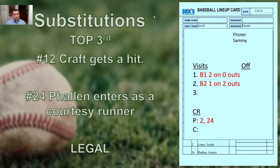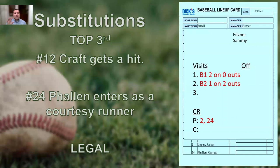Question from the chat: earlier when we put in a pinch runner for the DH, does that place the pinch runner as the DH? Yes — the pinch runner is a legal substitution and you are completely taking the designated hitter out of the game. A courtesy runner is not a pinch runner. A courtesy runner comes in only to run for the pitcher or catcher — it's part of the speed-up rules. So that earlier scenario with Epperson was a straight substitution, making Epperson the new DH.